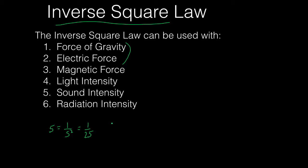Let's try it again for a different number. Let's take the inverse square of 2. The inverse of 2 is 1 over 2, and we square it. So now we've got 1 over 4. That's basically what the inverse square is and how you calculate it.